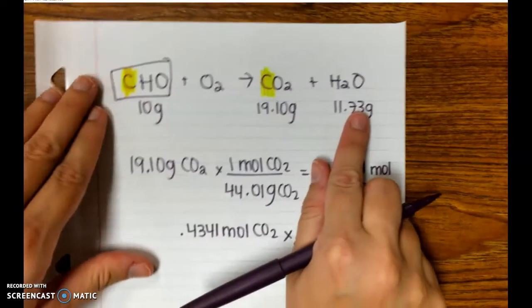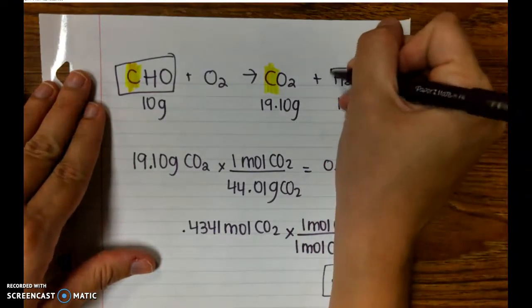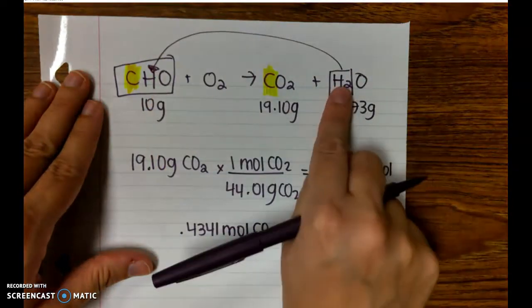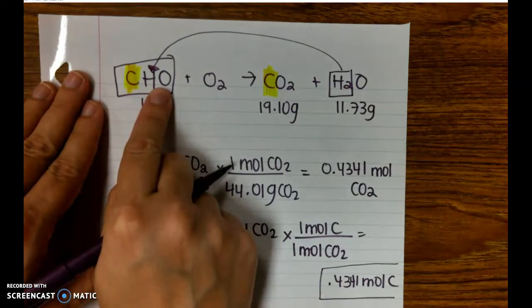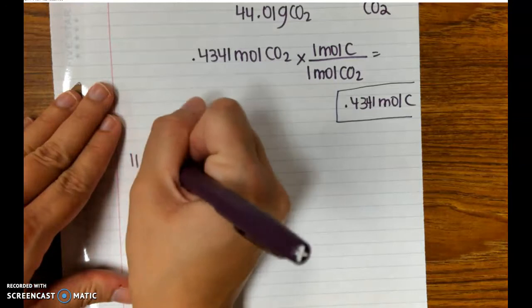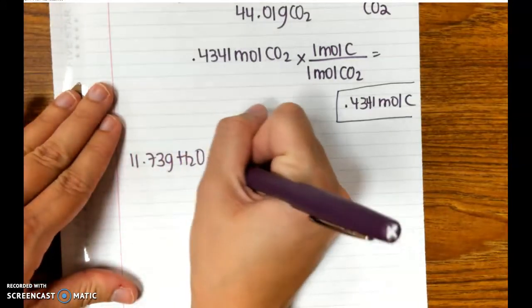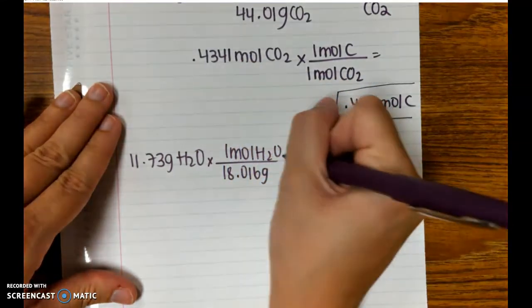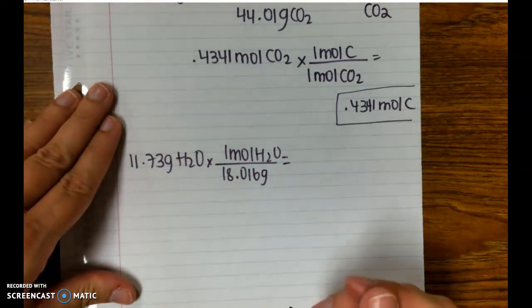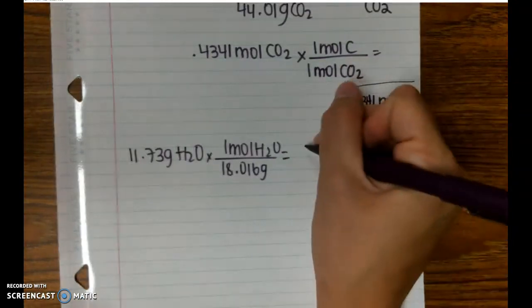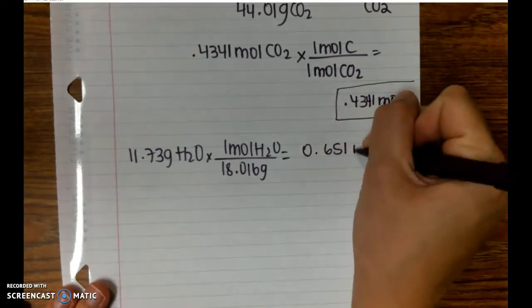My second one is the water. What do I want from the water? I want the hydrogen, because all of this hydrogen came from here. H is not anywhere else in the reaction. So I'll take my mass of water, divide it by the molar mass of water, and that gives me how many moles of water were made. That is 0.651 moles of water.